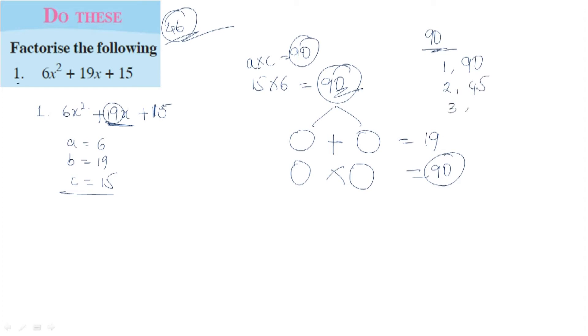So first we find the factors of 90. What are the factors of 90? 1 and 90, 2 and 45, 3 and 30, 6 and 15, 9 and 10.